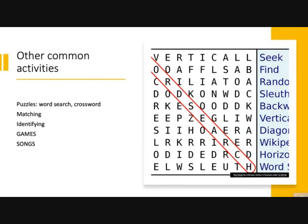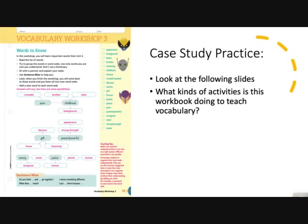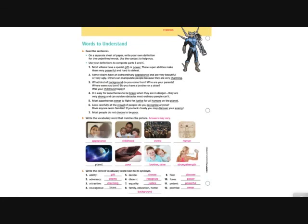There are lots of other common activities — as we talked about in steps five and six — playing games, puzzles, word searches, crosswords, matching, identifying games, and songs. For the last couple of slides, look at these four pages from an activity book focusing on teaching vocabulary. The question is: what kinds of activities is this workbook using? For example, this looks like a word web. Take your time, have a look at the next pages, take some notes, and feel free to pause the video.